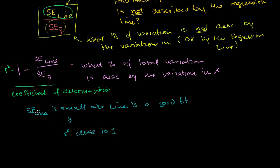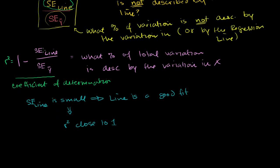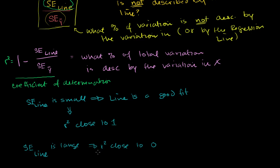Take the opposite case: if the squared error of the line is huge, that means there's a lot of error between the data points and the line. This fraction will be close to 1, and 1 minus that is going to be close to 0. So if the squared error of the line is large, the whole coefficient of determination — the whole r² — is going to be close to 0. That tells us that very little of the total variation in y is described by the variation in x, or described by the line.